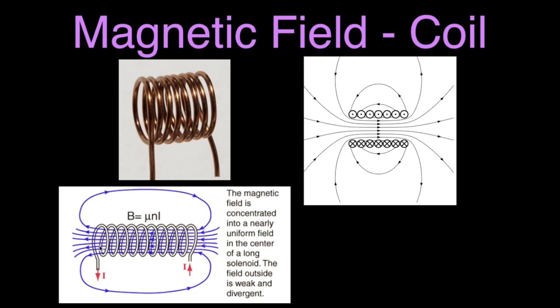This shows a coil of wire. The current is running up through the wire. You can wrap your hand around, point your thumb in the direction of the coil, wrap your fingers around. And if you get up to the top here, you'll notice that using the right-hand rule, the fingers will be pointing from right to left. That means that the magnetic field running through that coil of wire points from right to left.